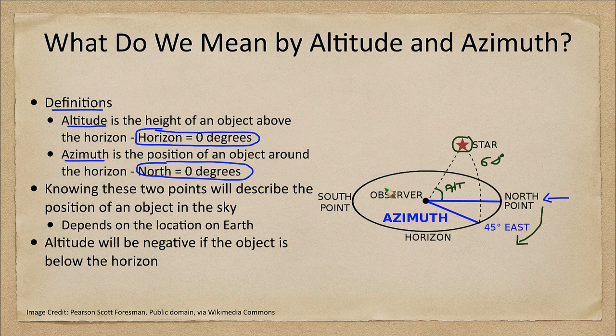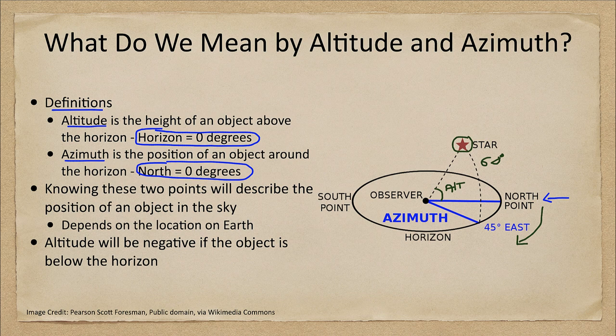Now this measurement depends on your position here on Earth. The altitude and azimuth that a person measures in one part of the world will not be the same as what a person would measure in another part of the world. For example, a measurement on the east coast of the United States would give a different value than someone on the west coast, and would be different than someone in Europe, Africa, or Australia.